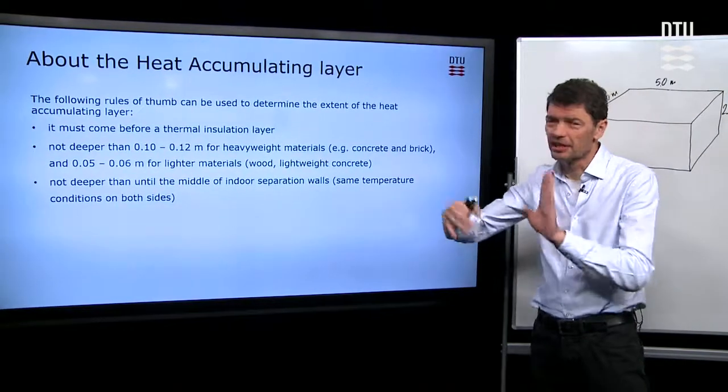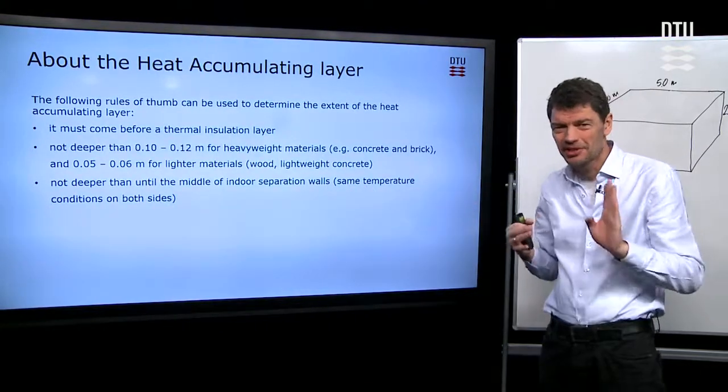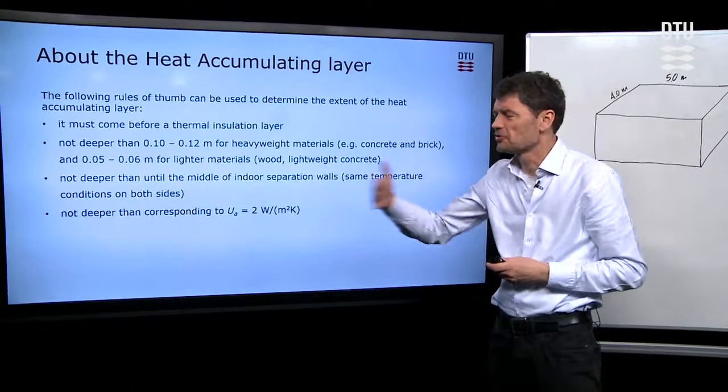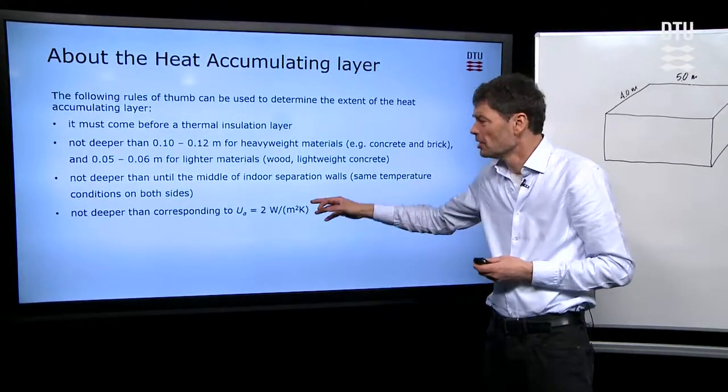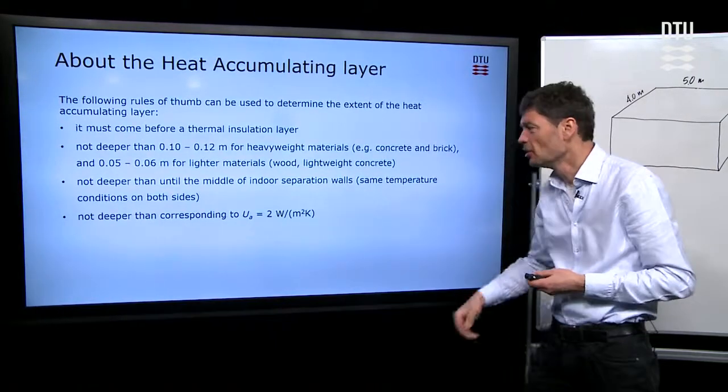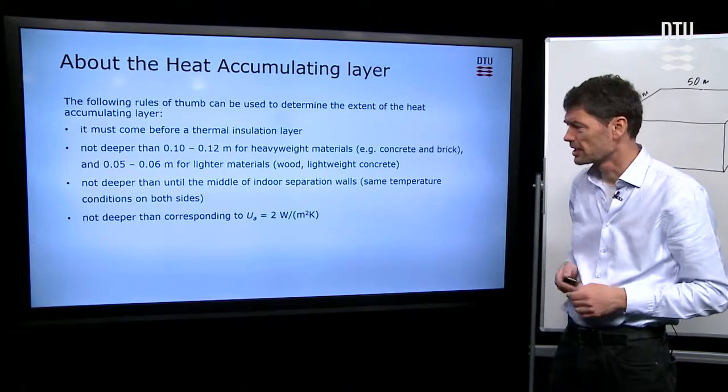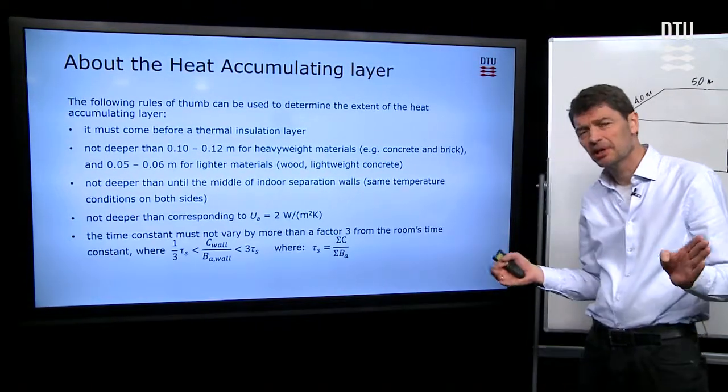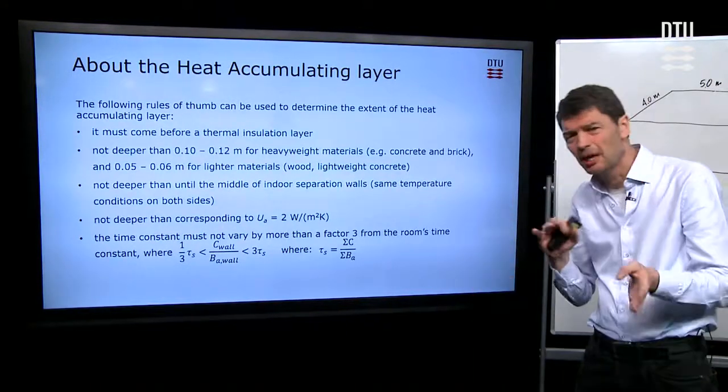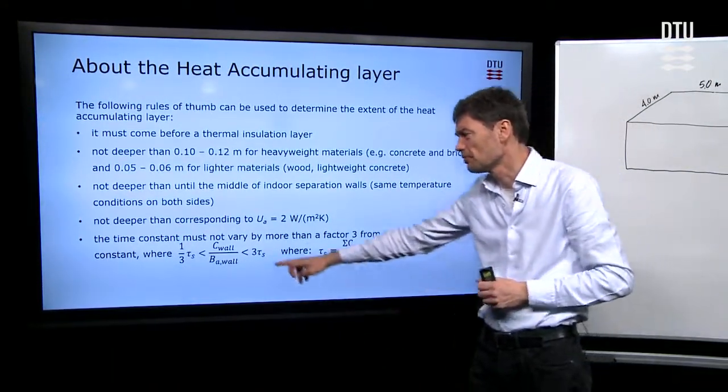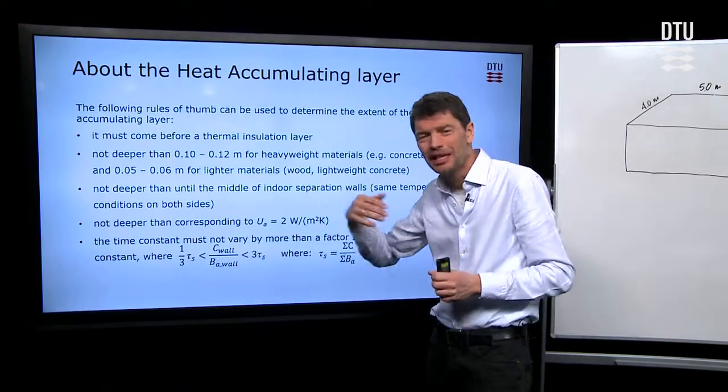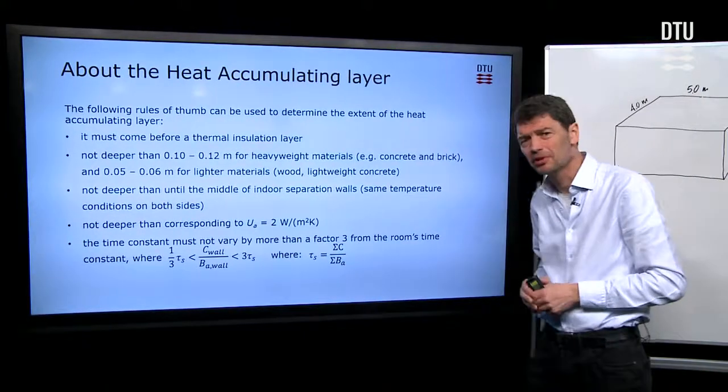If you have things that are symmetric, so you have a similar room on two sides of an interior wall, then you should of course consider only until the middle of the wall. Also, if the heat transmission into those layers in the wall is not so good, then we should consider only until we have a heat transmission coefficient into the layer which has to be larger than two watts per square meter Kelvin. And also, considering the time constant, since we have different components contributing to giving heat capacity to the room, they should more or less be of similar time constant, each of the individual components. For each wall or material, you can calculate its contribution to the time constant. And this should be not more than a factor, say three, less or more than the average or the whole time constant for the whole room.